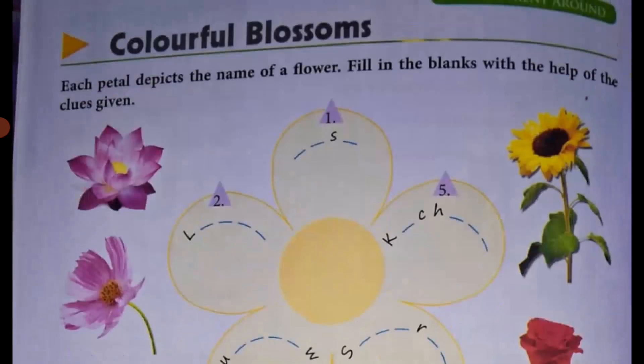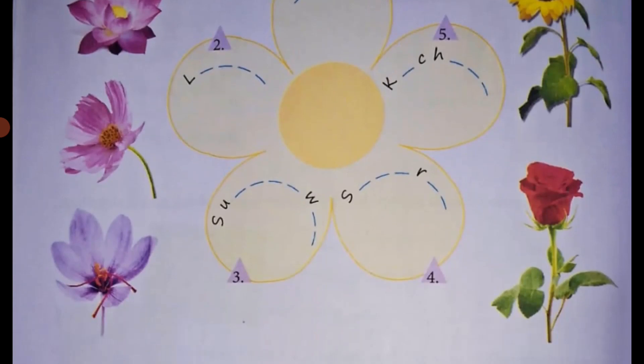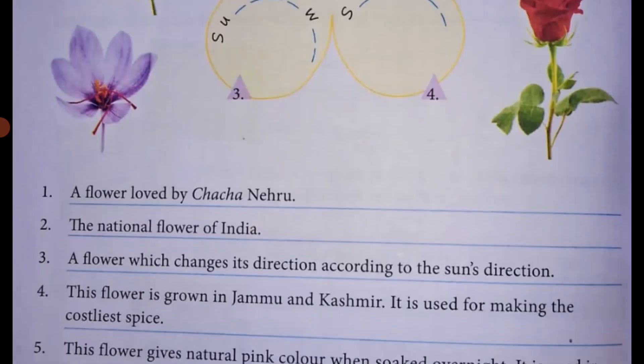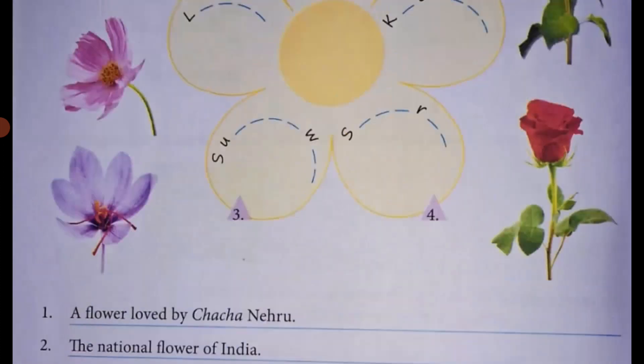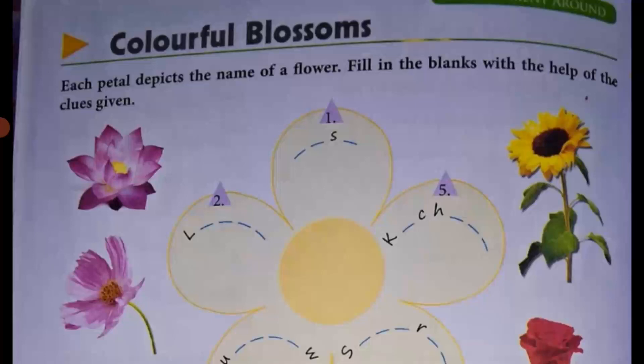The first one is a flower loved by Chacha Nehru. The answer consists of the letter S at third place. The answer is Rose, R-O-S-E, Rose.